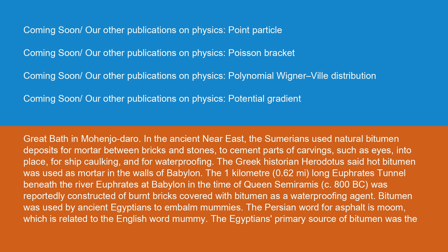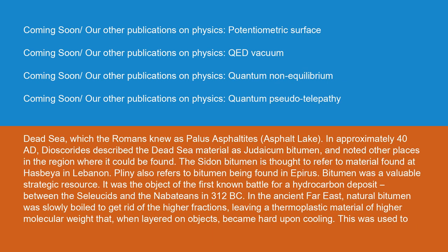Bitumen was used by ancient Egyptians to embalm mummies. The Persian word for asphalt is mum, which is related to the English word mummy. The Egyptians' primary source of bitumen was the Dead Sea, which the Romans knew as Lacus Asphaltites — Asphalt Lake. In approximately 40 AD, Dioscorides described the Dead Sea material as Judaicum bitumen. Bitumen was a valuable strategic resource — it was the object of the first known battle for a hydrocarbon deposit between the Seleucids and the Nabataeans in 312 BC.